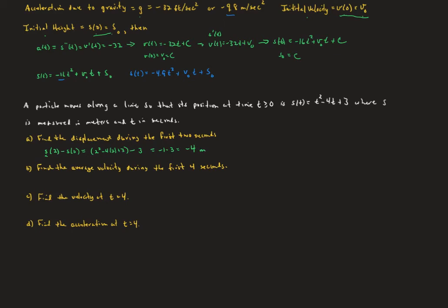And the units on that are going to be s units, which are going to be in meters. So what that's saying is in the first two seconds, it moves left 4 if we're going right and left, or down 4 if we're going up and down. Part B says find the average velocity during the first four seconds. So average velocity means we're going to take the position at time 4 minus position at time 0 over 4 minus 0. So s of 4 is going to be 16, 4 squared minus 16 plus 3, so I think that's going to be 3. And s of 0 is also 3, and so that means it's going to be 0. So the units on that would be meters per second. So our average velocity was 0.